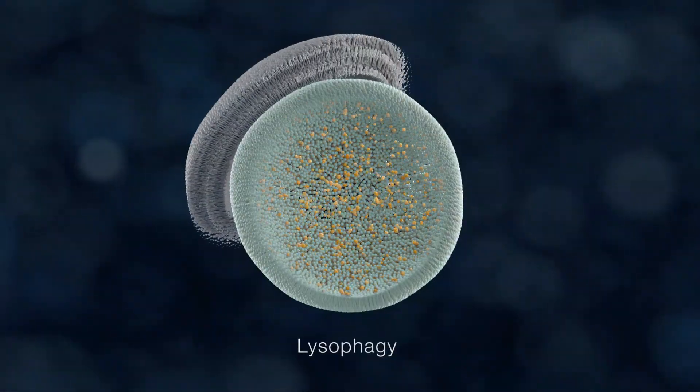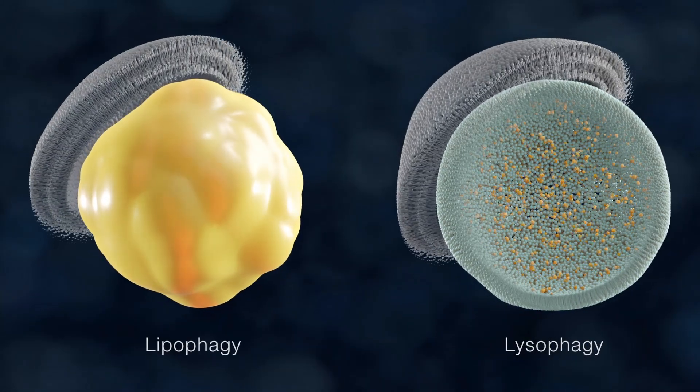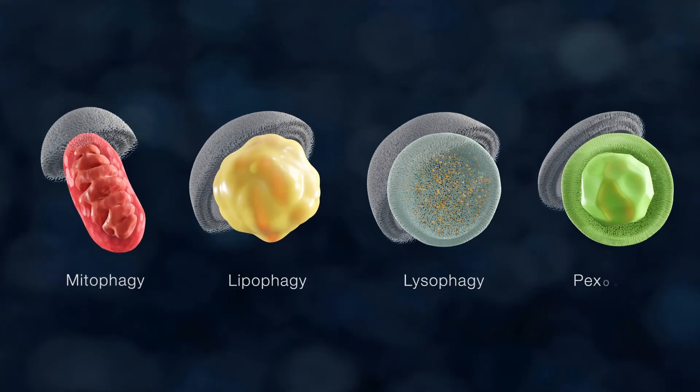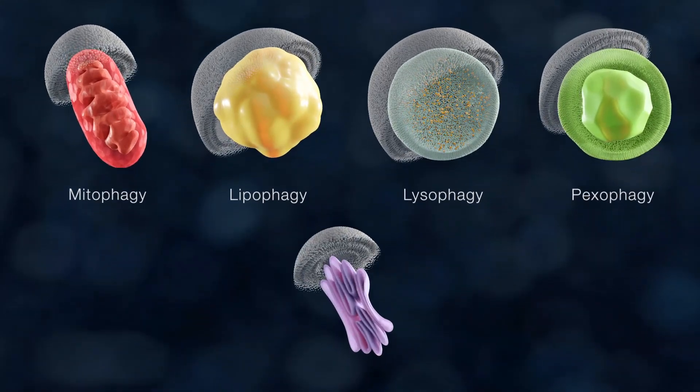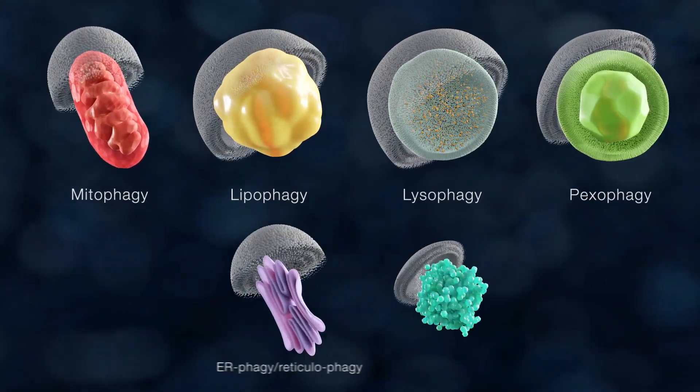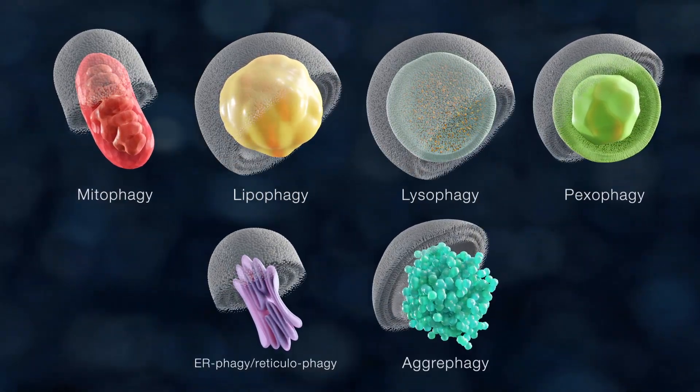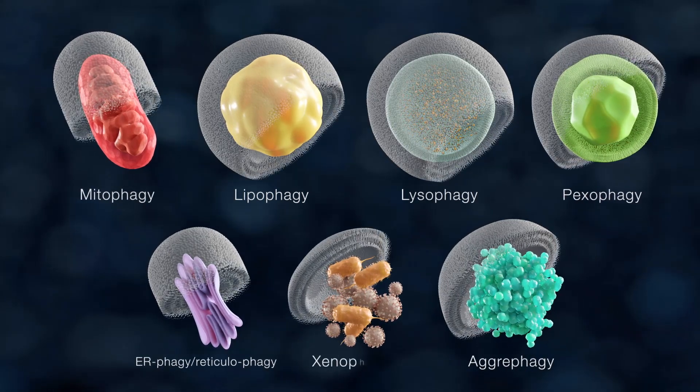Selective autophagy is involved in the regulated turnover of portions of organelles including mitochondria (mitophagy), peroxisomes (pexophagy), and the endoplasmic reticulum (erphagy), but also large protein RNA complexes, such as protein aggregates (aggriphagy), and pathogens (xenophagy).